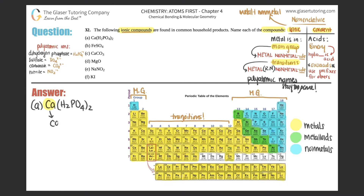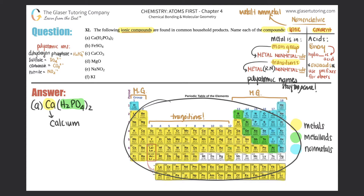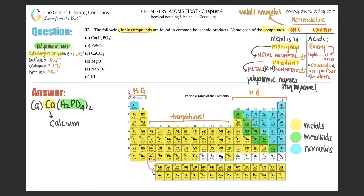Calcium would just be calcium, and now I have H₂PO₄ — that's not a single atom on the periodic table, which means it's a polyatomic ion. You need to either memorize your polyatomic ions or your teacher may provide them, but flashcards are a great method. One polyatomic you should know is dihydrogen phosphate, which is H₂PO₄ with a minus one charge. So the polyatomic name stays the same: H₂PO₄ is dihydrogen phosphate.